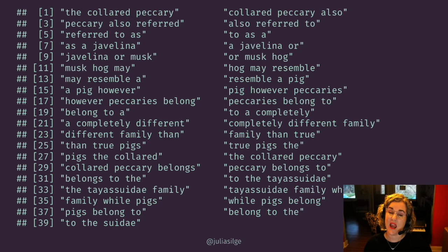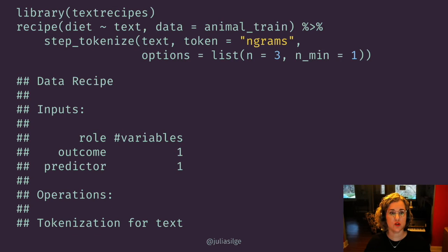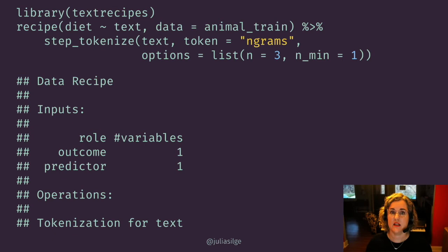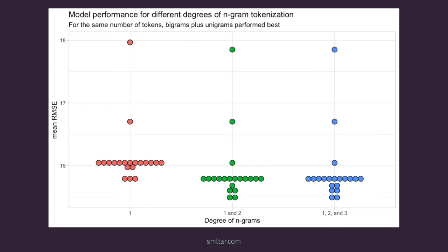Combining different degrees of n-grams allows you to extract different levels of detail from text data. Unigrams tell you which individual words have been used many times, and some of those words can get overlooked in bigram or trigram counts if they don't co-occur with other words as often. In tidy models, we collect all those kinds of decisions about how you're going to tokenize in a recipe. This plot compares model performance for a lasso regression model predicting the year for a corpus of United States Supreme Court opinions. Holding the number of tokens constant, using bigrams plus unigrams performs best for this particular corpus.